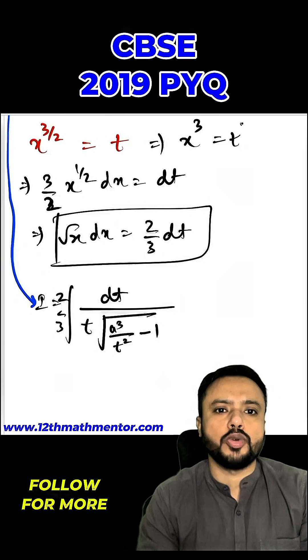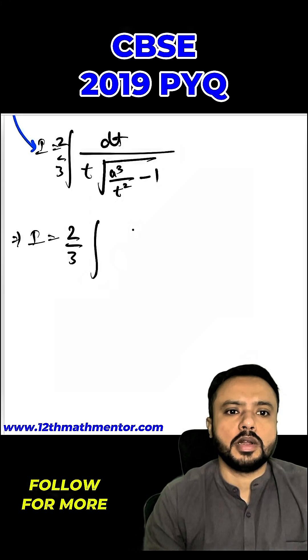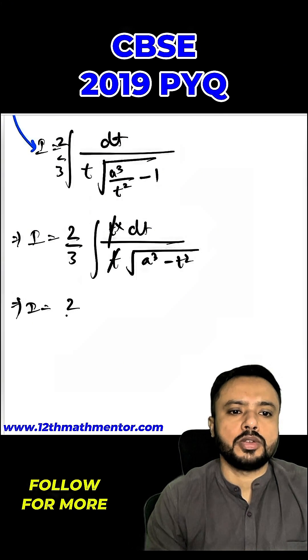So when I will square both sides, I will get x raised to the power 3 equals to t square. So that is why I have replaced here x cube with t square in the denominator. So I will simplify this. It will be I equals to 2 by 3 integral of dt by t root of a cube minus t square, and this denominator t square can go in the numerator and out of the root it will just be t, so I can cancel out this t and t.